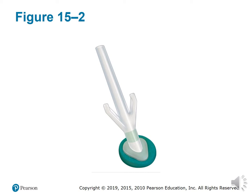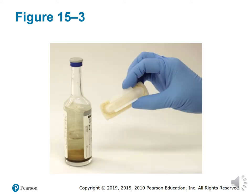This is what a chlorhexidine swab looks like. You break one of the small tubes on the side, and the antiseptic cleaning solution is released and fills the sponge at the top, which is then used to clean the site.